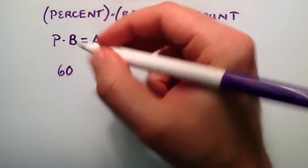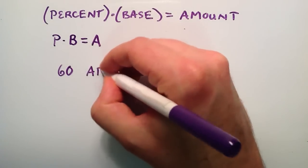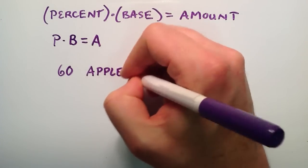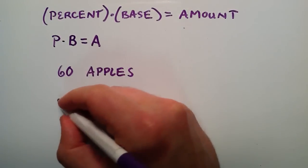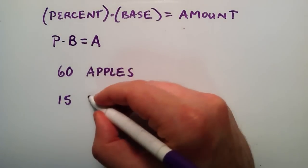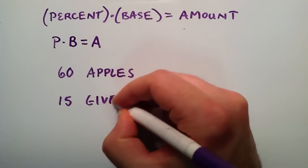So let's say that I have 60 apples, and I want to give away 15 of my apples. So we're going to just give 15 of them.